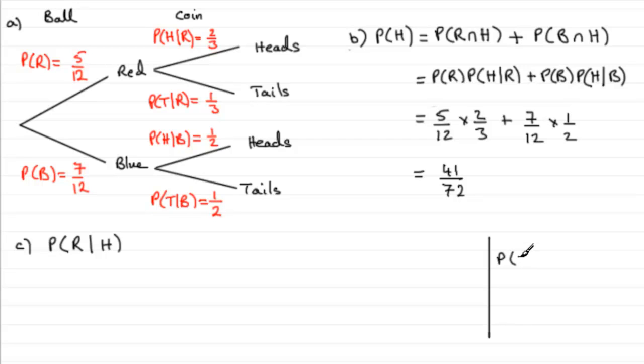But you'll see in your formula book, and as I've explained in the tutorials, that the probability of some event, let's say A given B, is equal to the probability of both events happening, A and B, divided by the probability of the given event, in this case B.